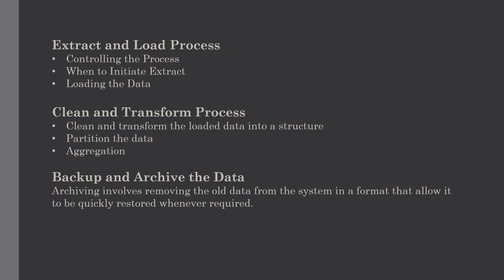Our next process involved in data warehousing is backup and archiving the data, which is also a very important process. In order to recover data in the event of data loss, software failure, or hardware failure, it is very necessary to keep regular backups. Archiving involves removing old data from the system in a format that allows it to be quickly restored whenever required. For example, in a sales analysis data warehouse, it may be required to keep data for at least four years, with the latest one year kept online, enabling month-on-month comparison across years.